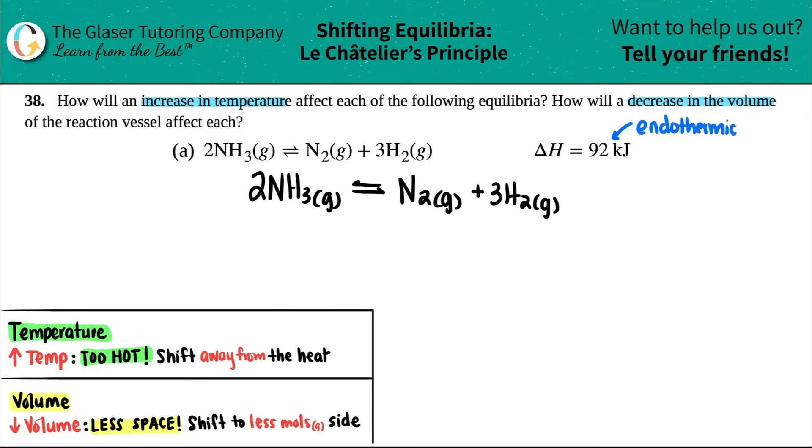Remember, endothermic reactions means you're absorbing heat, and if you're absorbing heat, the heat stays on your reactant side. If it was on the product side, that's exothermic. I'm just going to say plus heat on this side. This makes it much easier when dealing with temperature changes.